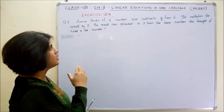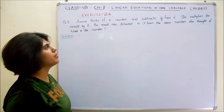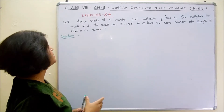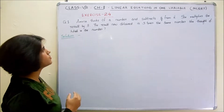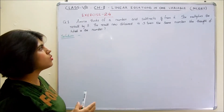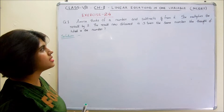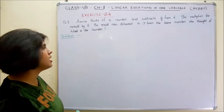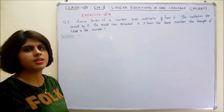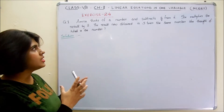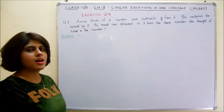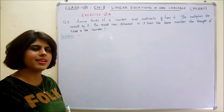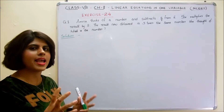First question: Amina thinks of a number and subtracts 5 by 2 from it. She multiplies the result by 8. The result now obtained is 3 times the same number she thought of. Then what is the number? So according to the question, Amina thinks about a number, so let us take it as x.